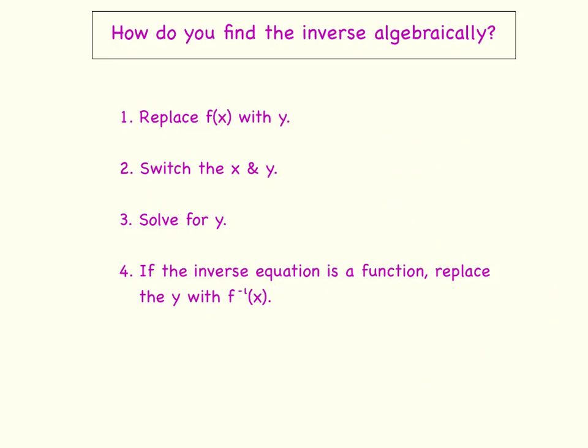Before we move to step number 3, I want to remind you one more time that when you are switching the x and y, when you are exchanging them, you do not switch the numbers or the coefficients that the x might have. So if you have y equals 3x, it will now be x equals 3y. You are only switching literally the x variable with the y variable. Now on to step number 3, which is solve for y. So after you switch the x and the y, now you need to solve for y because y is no longer isolated on one side of the equation. And then finally, if the inverse equation is a function, replace the y with the inverse of x, which is f to the negative 1 power of x.